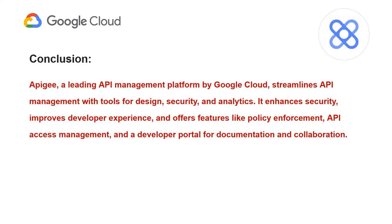To summarize, APIs are a set of rules that enable software applications to communicate and share data. API management controls, monitors, and secures APIs, ensuring efficient and secure usage. Apigee, a leading API management platform by Google Cloud, offers tools for API design, security, analytics, and more. It streamlines API management, enhances security, and improves developer experience with features such as policy enforcement, API access management, and a developer portal for documentation and collaboration. Apigee helps organizations build scalable, secure, and efficient APIs for their applications and services.